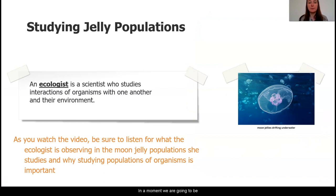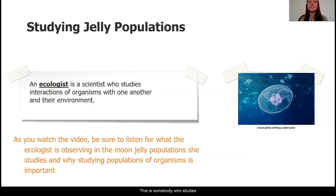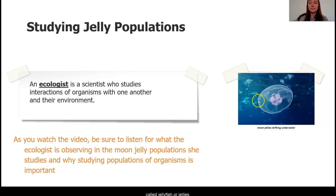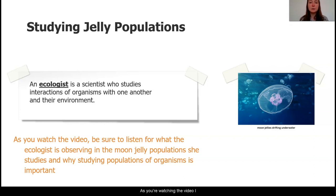In a moment, we are going to be watching a video and be introduced to a type of scientist that we're going to be working with over the next few weeks. This scientist is called an ecologist — somebody who studies interactions of organisms with one another in their environment. When I say organisms, I mean living things like animals and plants. The specific type of organism that this scientist studies are called jellyfish or jellies. Lots of people call jellyfish by that name, even though many people don't know that they're not actually a fish. The scientist studying these moon jelly populations has noticed something about them in the previous weeks. As you watch the video, listen carefully to what she has observed about the moon jelly populations and why she thinks it's so important to study different populations of organisms.